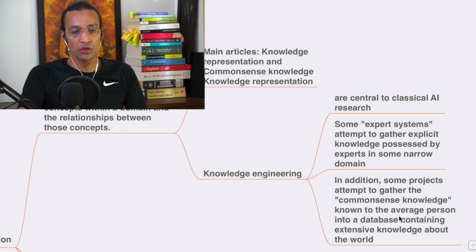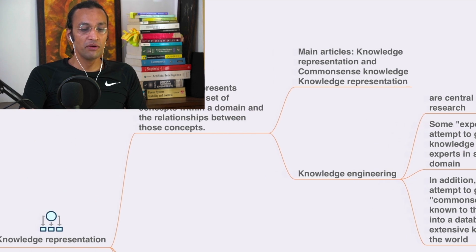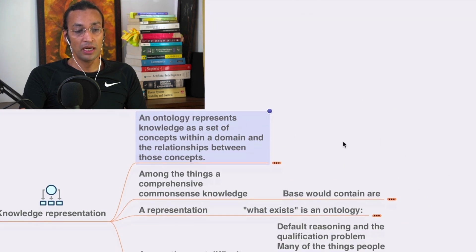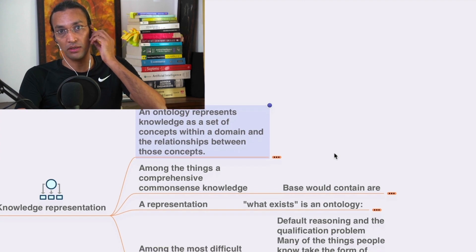In addition to the project attempting to gather commonsense knowledge known to the average person in a database containing extensive knowledge about the world, they went deep into the domain. They said we will go deep into the domain rather than going as a general approach. That's called narrow AI.